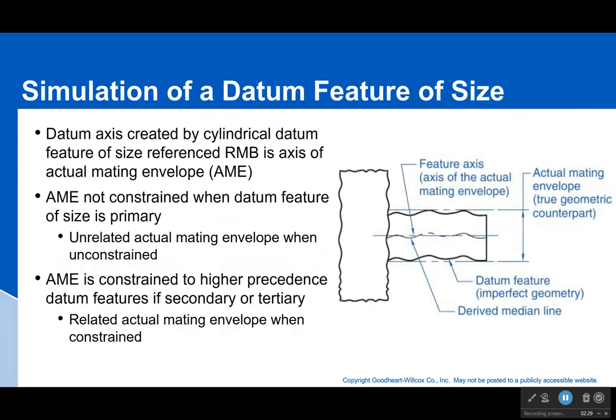This is important when we think about how we simulate datum features. Flat surfaces make a lot of sense, but features of size require tools that hold the part differently depending on how we want to look at it. Remember: the actual mating envelope takes into account that the feature is supposed to be perpendicular to something, while the unrelated actual mating envelope just asks what's the smallest hole that can go over the cylinder.